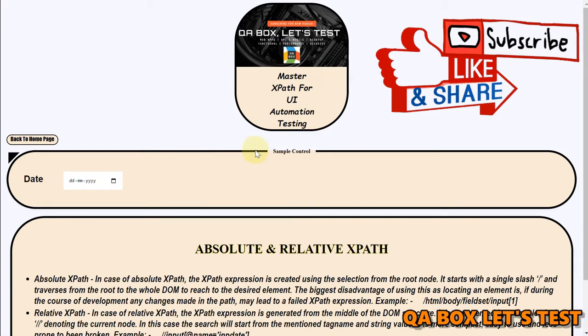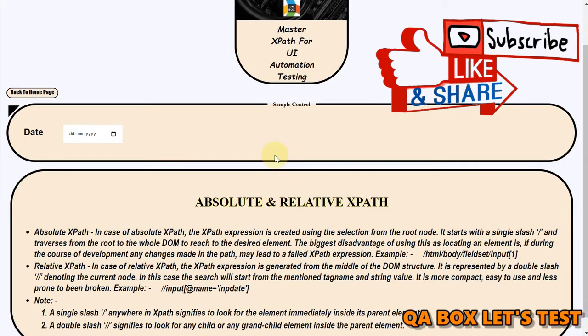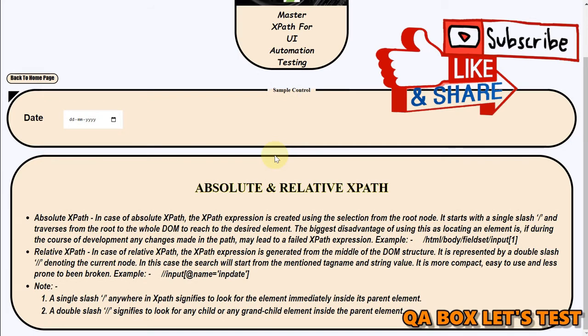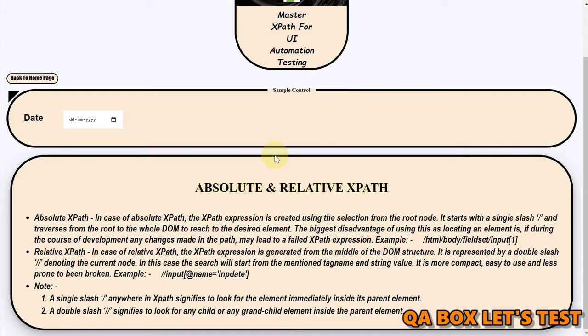In case of absolute XPath, the XPath expression is created using the selection from the root node and our root node is HTML. It starts with a single slash, so we say HTML and then it traverses from the root to reach the desired element.